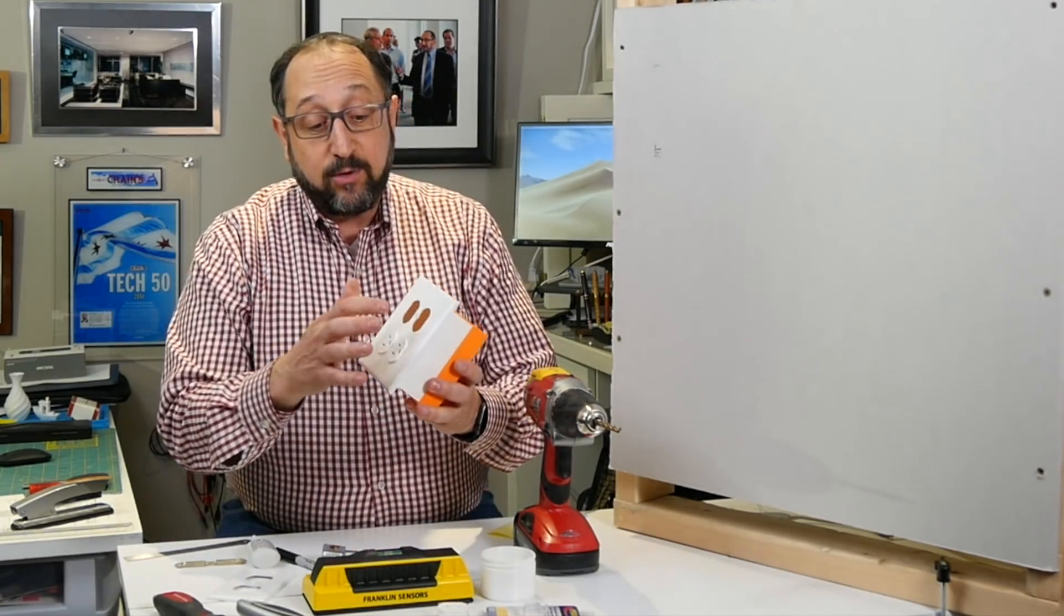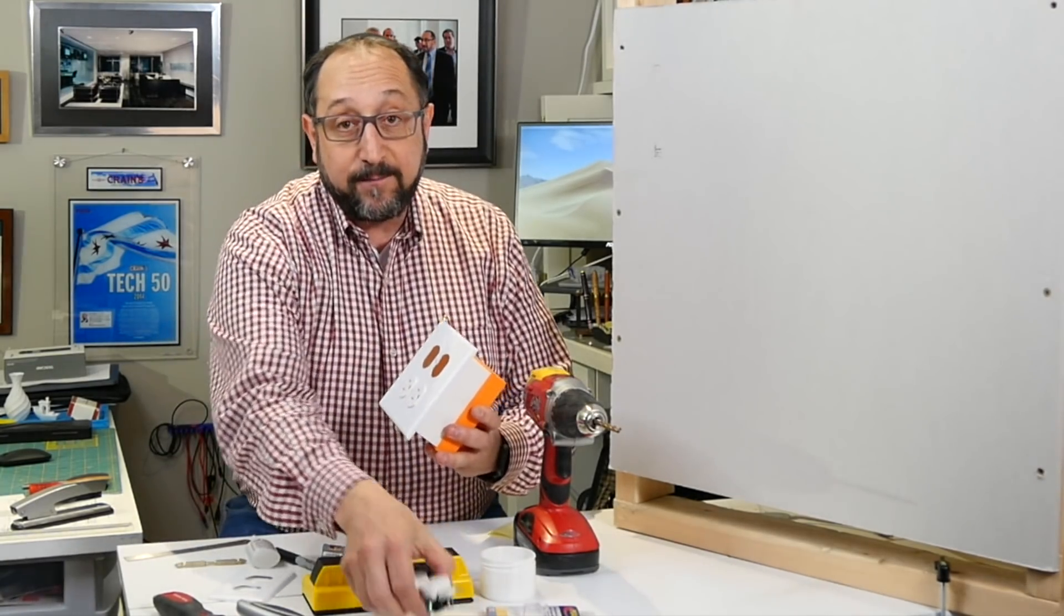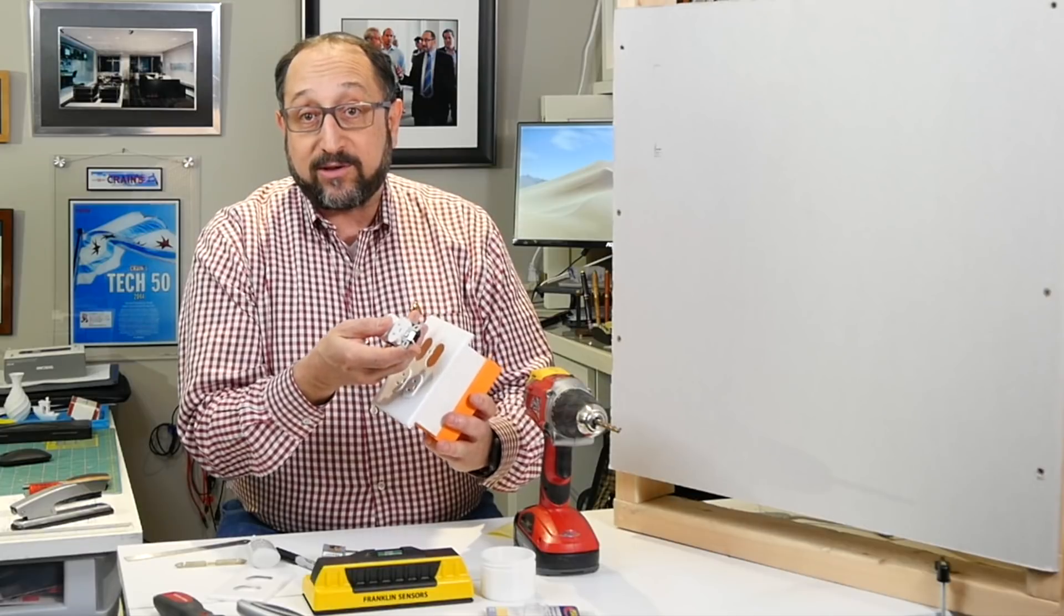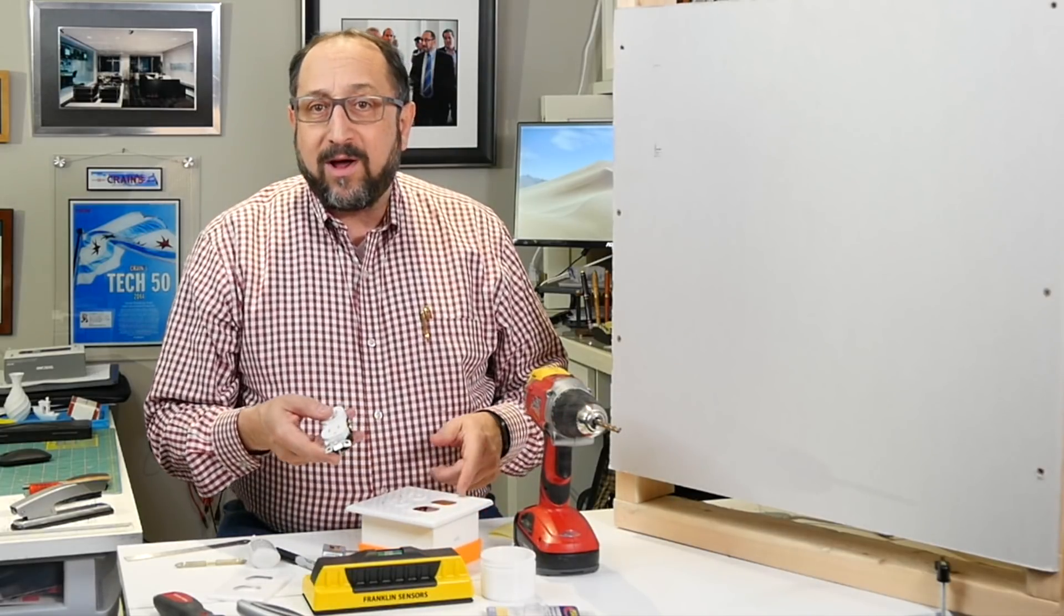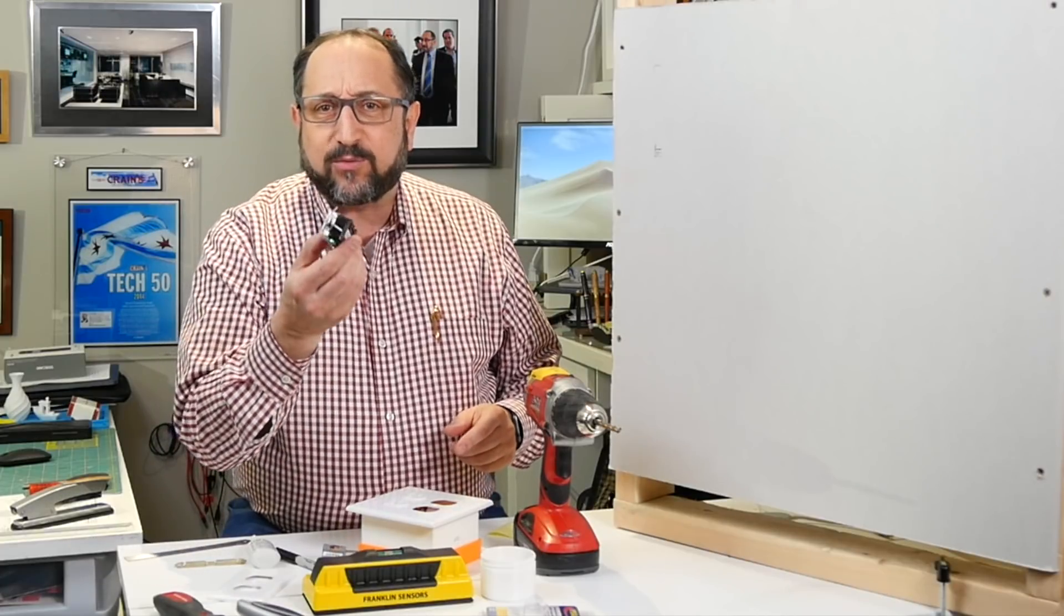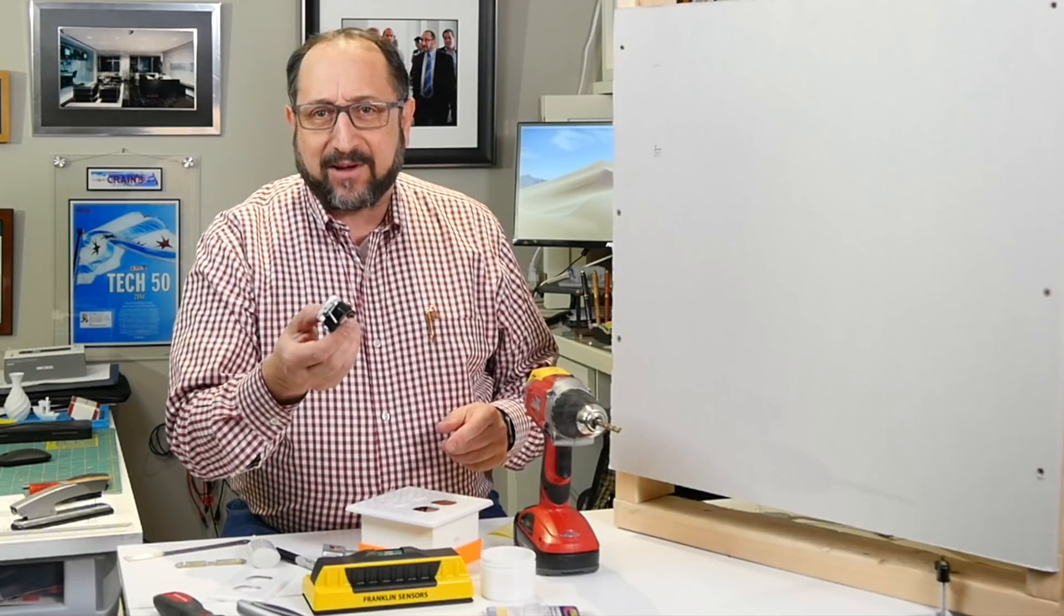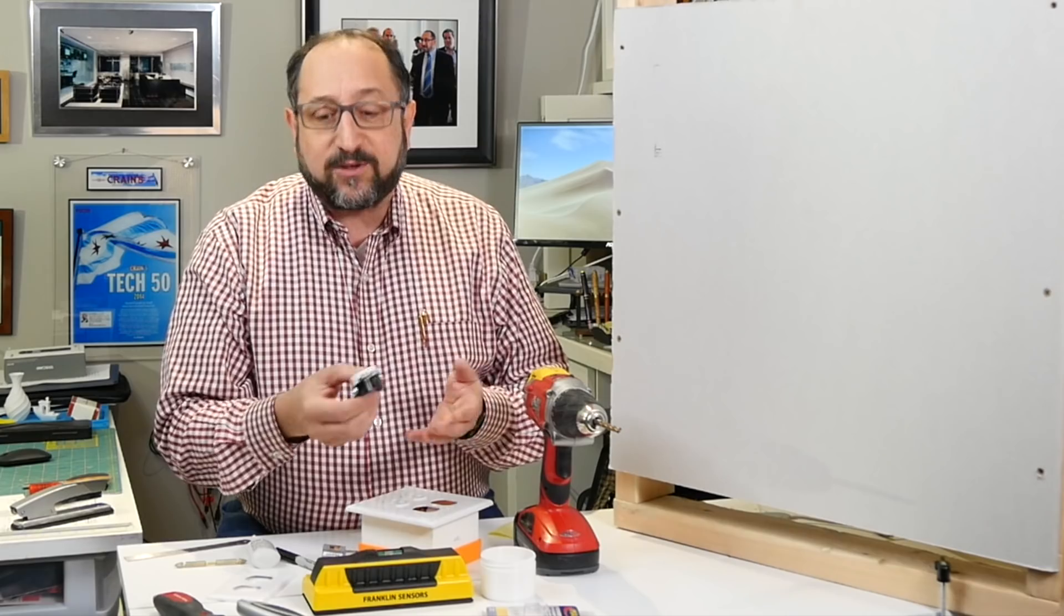Then obviously you need the faceplate for your outlet, and you need two sockets because you want it to look like a real outlet. The faceplate was under two dollars, each of these were 99 cents at a big box store. You don't need expensive ones.